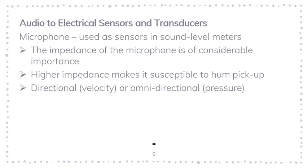When considering using a microphone, one of the most important parameters is impedance. From circuits, impedance is the total opposition to current in a circuit. This is important because when we have a higher impedance, that means we have a higher voltage output, and that voltage output is very important for signals that are in levels of millivolts or microvolts.